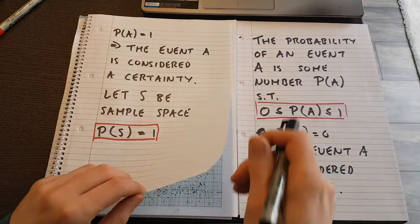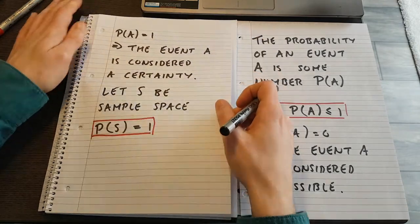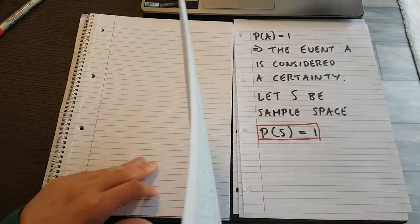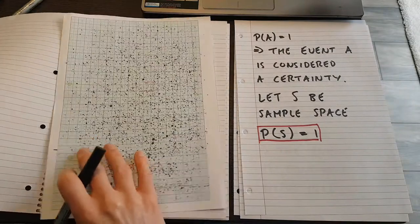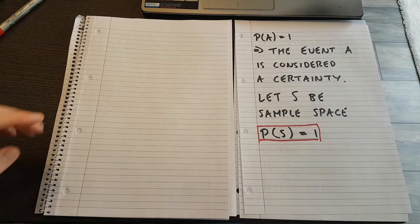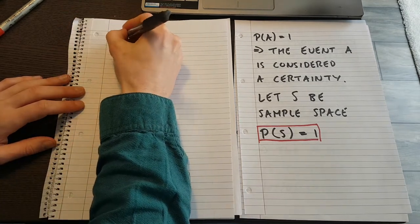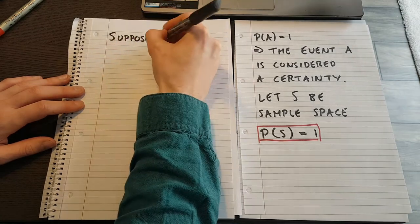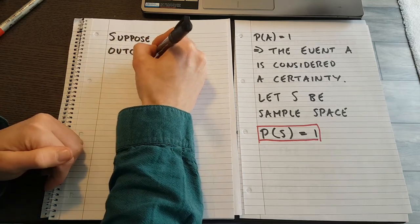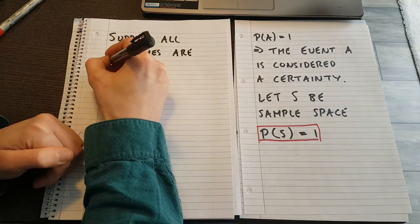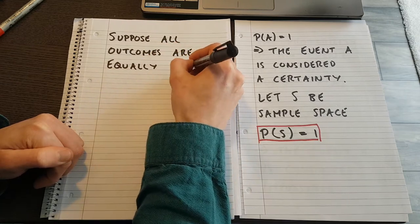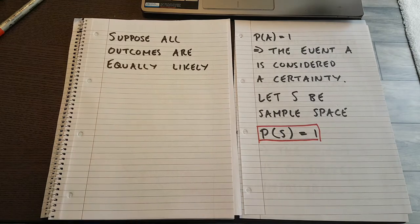Now, that's some stuff about the sample space. Now, let's do a really easy example, let's talk about equally likely outcomes. I suppose all outcomes are equally likely and that there's finitely many of them.